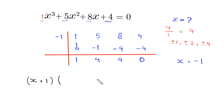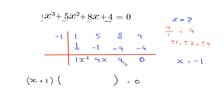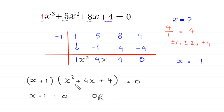To get the other factors, we use the remaining coefficients. Because we had a third power of x and one power is already accounted for, with the remaining values we write x squared, then 4x, then the constant 4. So we get the expression x squared plus 4x plus 4. Either x plus 1 equals 0 or x squared plus 4x plus 4 equals 0.